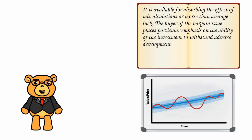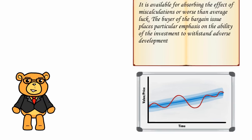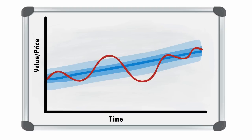The buyer of the bargain issues places particular emphasis on the ability of the investment to withstand adverse developments. In practice, this means that opportunities may not arise that frequently, since securities may appear only mildly undervalued or overvalued most of the time. However, the value investor must be patient in waiting for these opportunities to present themselves.